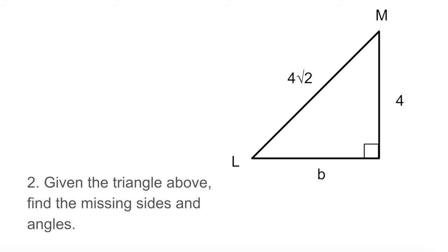In problem 2, we're given a triangle that has a hypotenuse of 4 root 2. And let's see, angles L and M are both unknown, and side B is unknown, but look, this side is 4. So here we don't know either one of these two angles, but what we do know is that this side is 4, and the hypotenuse is 4 root 2.